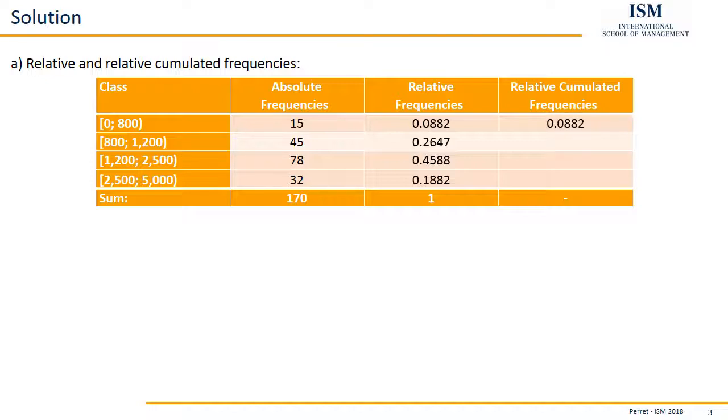Giving us the first value. Then to the 0.0882 we add the relative frequency of the second class, so we add the 0.2647, giving us an amount of 0.3529. And to this we add the next relative frequency of 0.4588, giving us for the third class a relative accumulated frequency of 0.8117. To the 0.8117 we add the last relative frequency for the last class, and we get one.